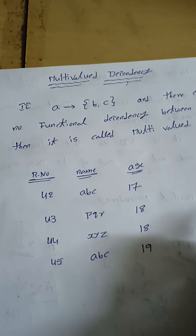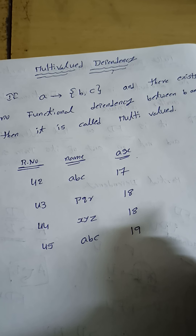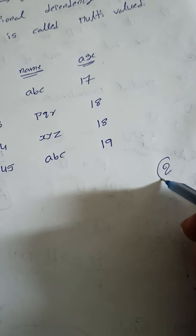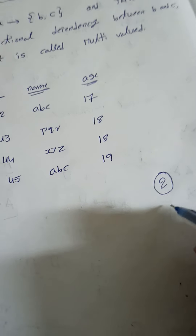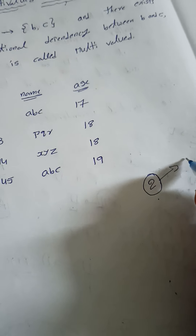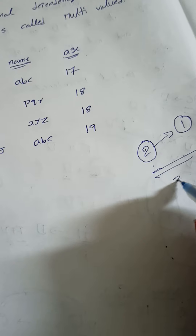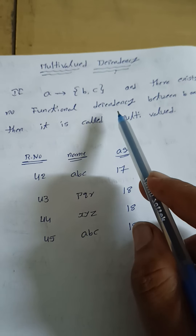Already we know what is the meaning of multivalued dependency. The multivalued dependency occurs when two attributes in a table are independent of each other, and both of these two attributes are dependent on another attribute. That means we need at least three attributes in the table to identify multivalued dependency.